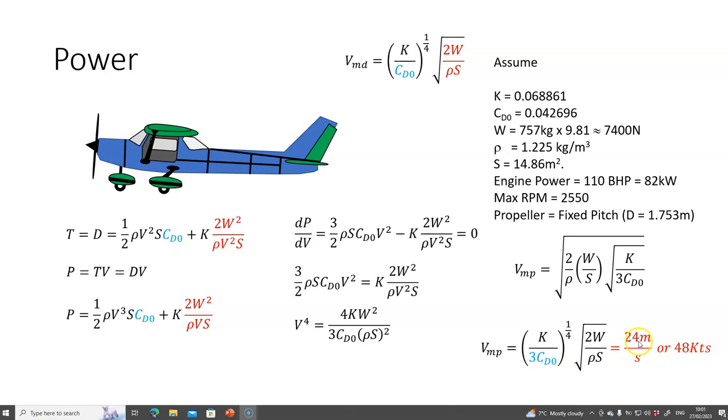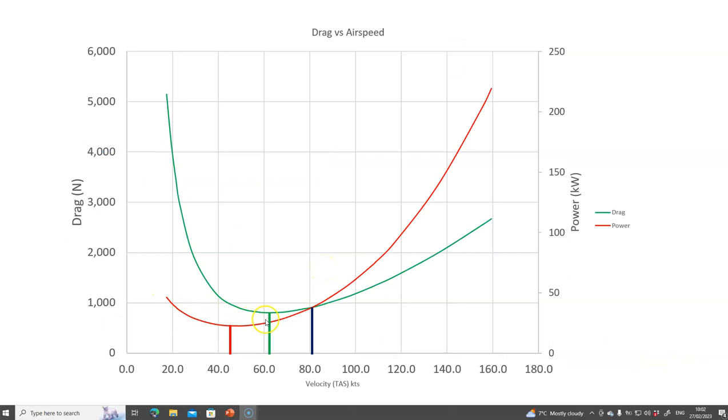If I plot power against velocity using all these values, I will get a graph in red, and there is the velocity of minimum power. We can see that the two graphs intersect at this point, which is 81 to 82 knots.